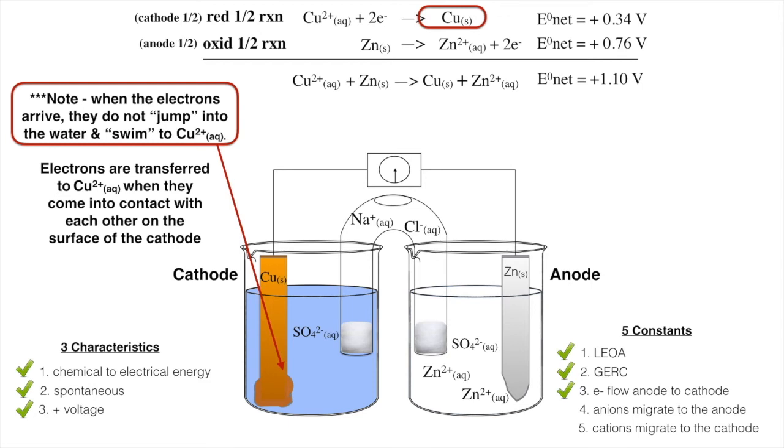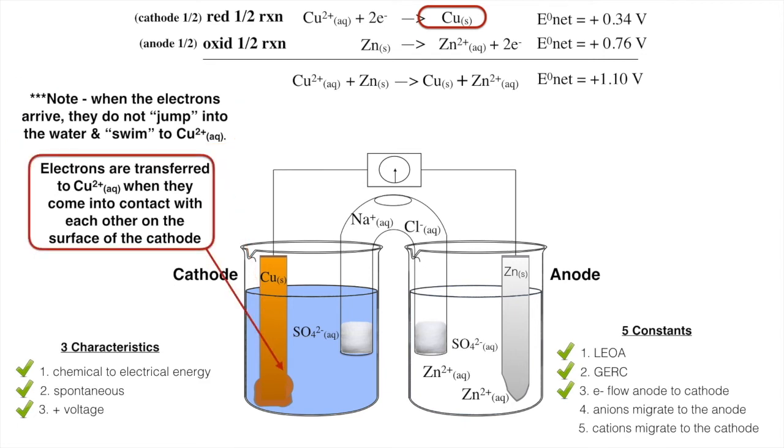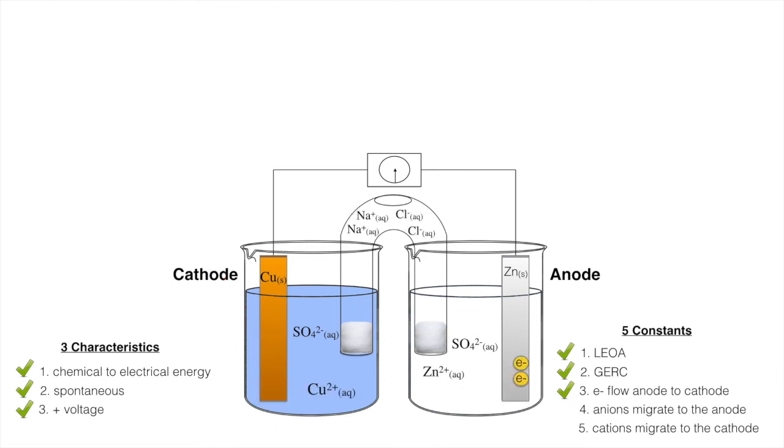Okay. Note. When electrons arrive, they do not jump into the water and swim to Cu2 positive. Okay. Electrons are transferred to copper 2 when they come into contact with each other on the surface of the cathode. So if you watch closely again, the electrons arrive. They don't jump into the water. Copper 2 touches the surface and then the electrons are gained by the copper 2. Okay. Good. Just want to make that clear.